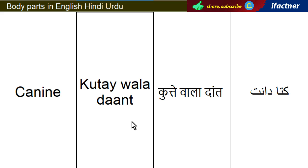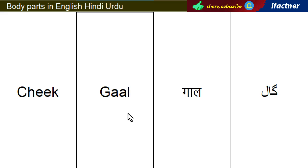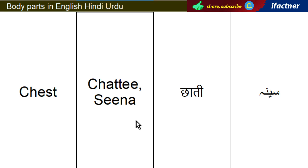Kuttaywaala daant — Canine. Gaal — Cheek. Chhaati, Seena — Chest.